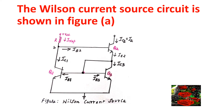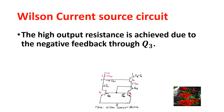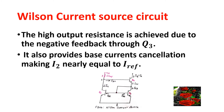This is indicated in the diagram. The high output resistance is achieved due to the negative feedback through transistor Q3. It also provides base current cancellation, making I₂ nearly equal to I_reference.